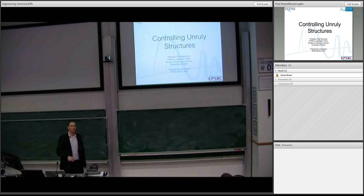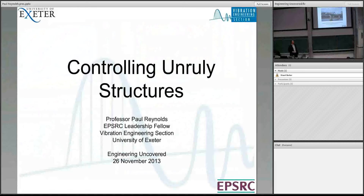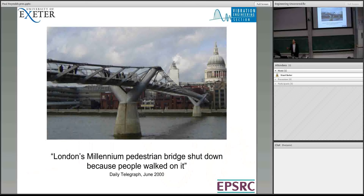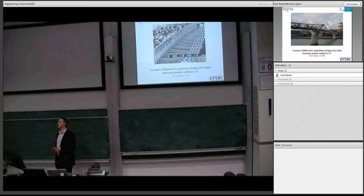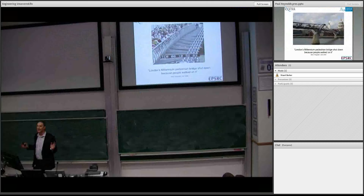What is an unruly structure? Well, in my mind, something like London Millennium Bridge. How many of you are familiar with the problems with the London Millennium Bridge? It's 13 years ago now, so most of you were about seven or eight at the time. But this is the opening day, June 2000, and essentially the bridge started moving. People tied themselves with the bridge because that's the easiest way to walk, and we got this very severe level of vibration.